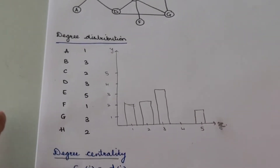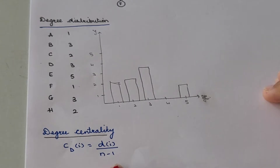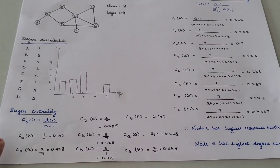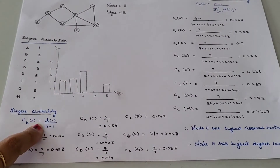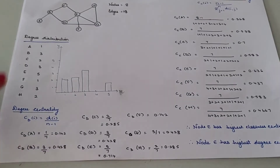Next we will be calculating degree centrality. In order to calculate degree centrality, we have the formula: CD(i) = d(i) / (n - 1), where n represents the number of nodes. We will be calculating this for each and every node. For node A, the degree is 1, so 1 upon n minus 1 — that is 8 minus 1 equals 7 — giving 1/7 = 0.142.